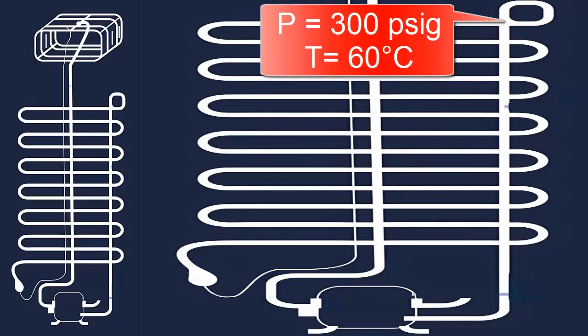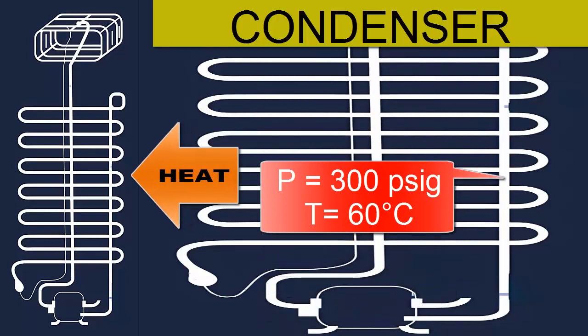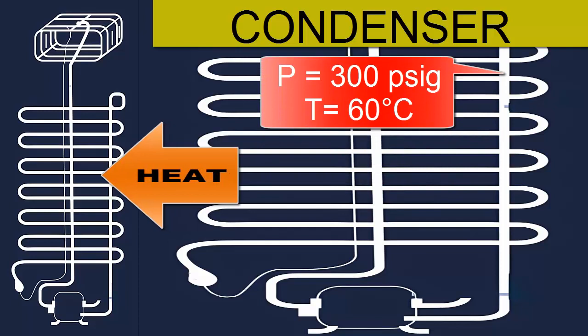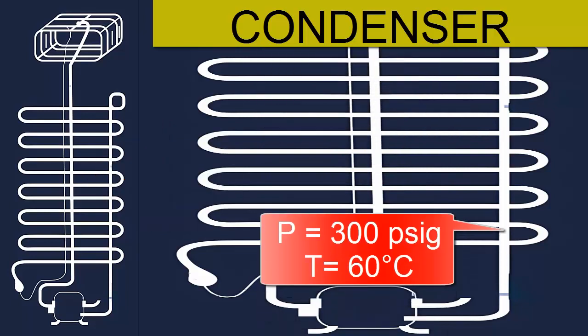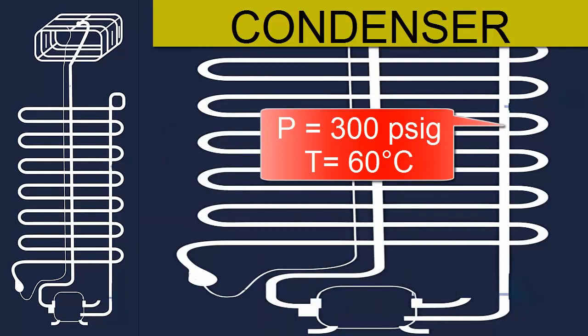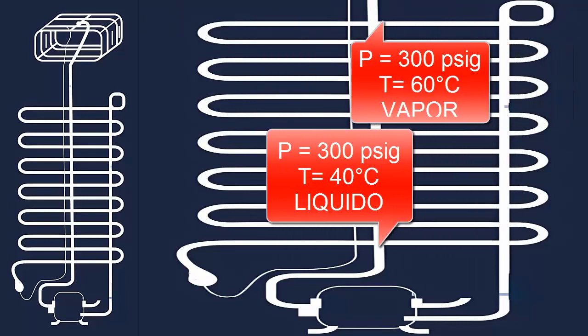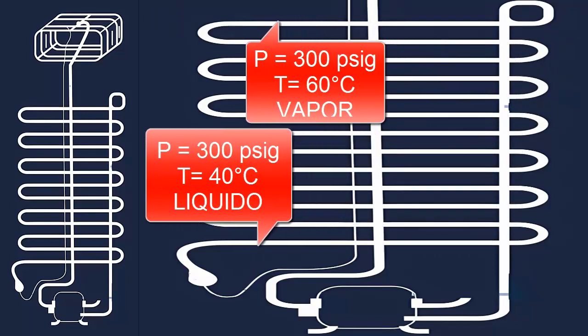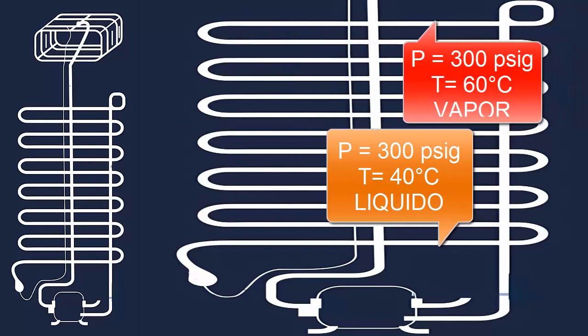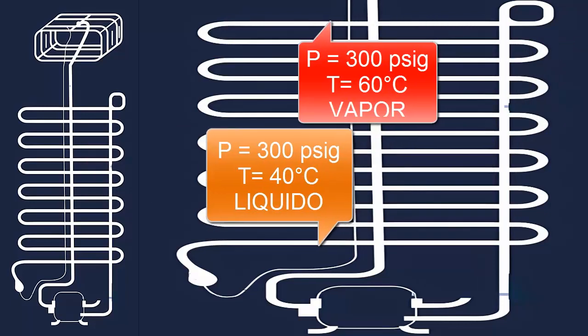In the condenser, the refrigerant must lose the heat absorbed from the food and the energy absorbed in the compressor. This heat must be expelled in the condenser into the environment. This heat dissipation process is favored by the high pressure that the R404A refrigerant gained in the compressor.